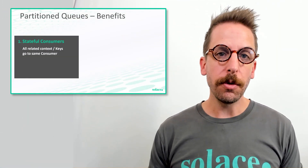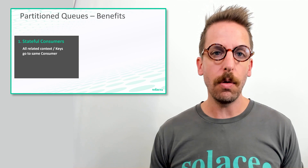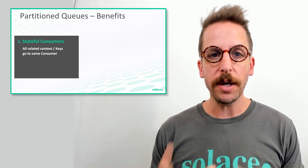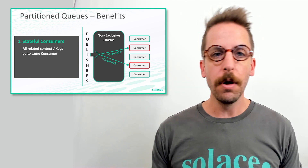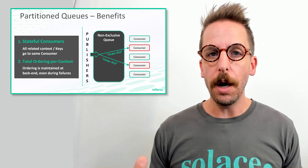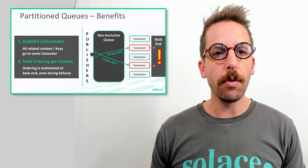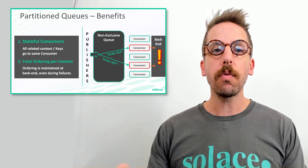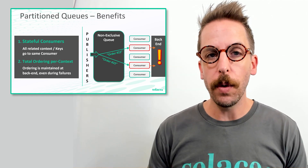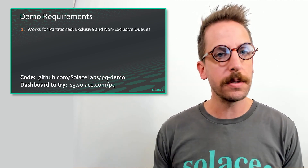So why are partition queues better than Solace's traditional non-exclusive queues? I'll give you two good reasons. One: stateful consumers that require all related message data for the same thing — like a ticket number, an order ID, or a stock symbol — all go to the same consumer for processing. Non-exclusive queues can't give you that because of their arbitrary round-robin distribution. Two: ordering — maybe the consumers are stateless, but at the back end you have some order entry gateway or payments engine that requires all related things are in the correct sequence.